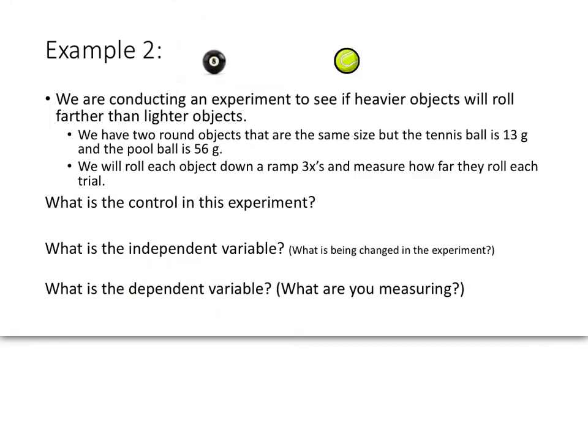Let's move on and check out another example. This is something from second semester that we'll be looking at, but might as well look at it now. We've got two objects that are the same size, roughly, a pool ball and a tennis ball. But as you all probably know, the pool ball weighs much more than the tennis ball. So we'll roll the object down the ramp three times, and we'll measure how far they roll. Now, it's the same ramp every time, and we start the balls at the same place. But what's the control in this experiment? Well, if we read, it says, see if heavier objects will roll farther than lighter objects. Well, in this case, let's say the control is the heavier object. In this case, that's the pool ball.